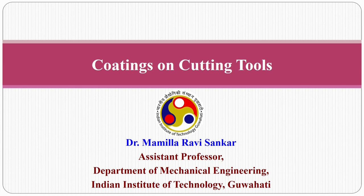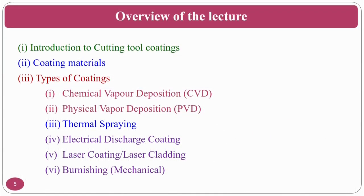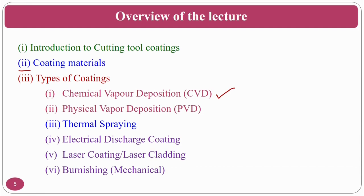Now moving to cutting tool coatings. The overview covers: introduction to cutting tool coatings, what types of cutting tool coatings are required, why they are required, coating materials, and types of coating techniques — such as chemical vapour deposition (CVD), physical vapour deposition (PVD), thermal spraying, plasma spraying, electrical discharge coating, and laser coating or laser cladding.